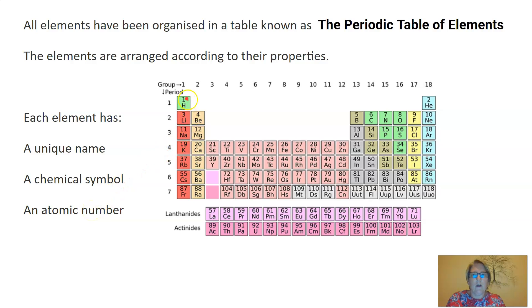For example, if we look at the first elements over here, the symbol is H, the name of the element is hydrogen and the atomic number is one.